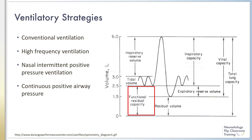Ventilatory strategies for RDS must be tailored based on the severity of patient illness. In moderate to severe RDS, it is necessary to deliver pressure to keep the lungs inflated and to prevent atelectasis and further collapse. Strategies to achieve this goal include ventilation with conventional or high frequency ventilators, in addition to non-invasive strategies such as nasal intermittent positive pressure ventilation, or CPAP — continuous positive airway pressure.